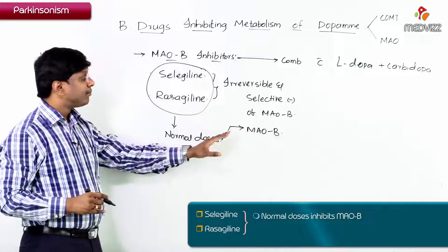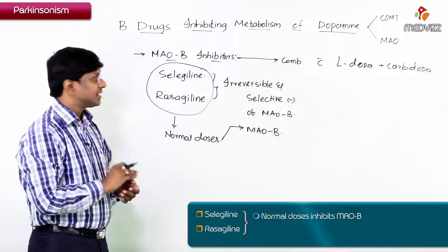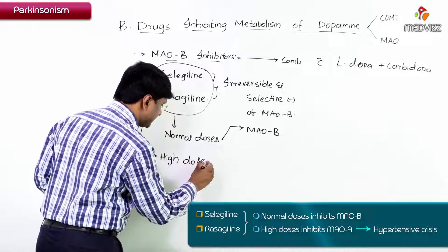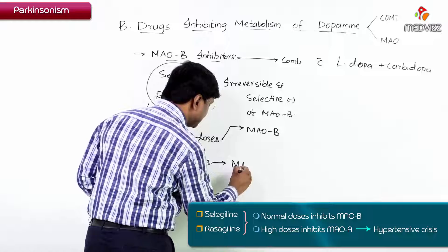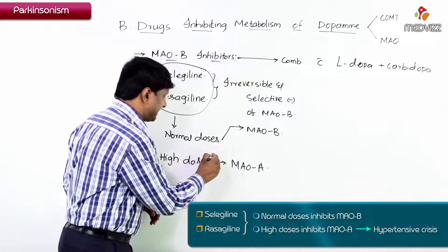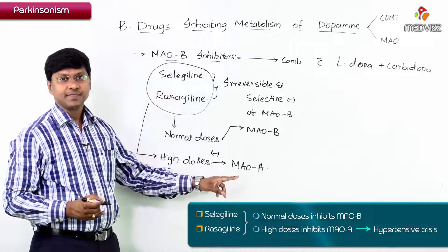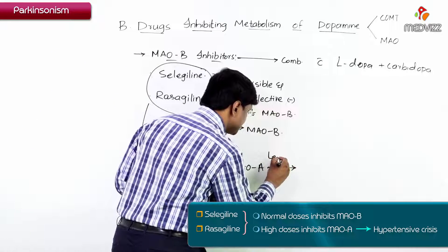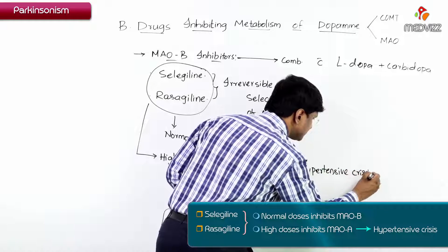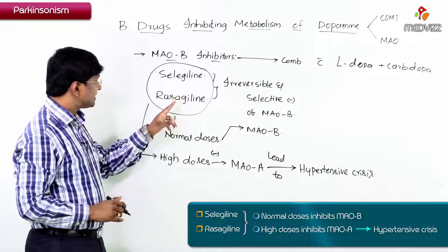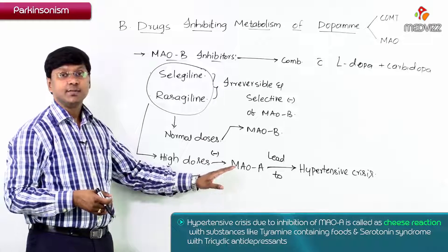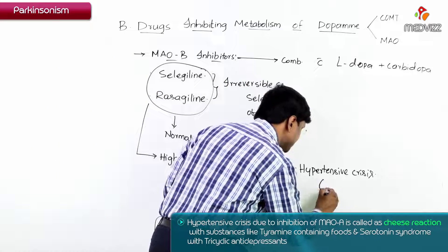However, when selegiline and rasagiline are given at high doses, they will also inhibit monoamine oxidase A. Inhibition of MAO-A at high doses leads to hypertensive crisis, which is known as the cheese reaction.